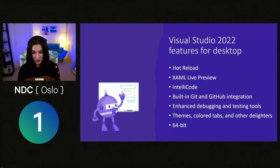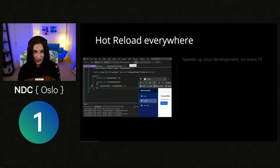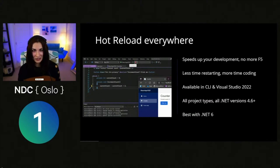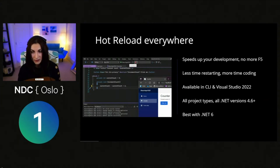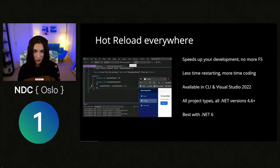One special feature I want to highlight is hot reload. In Visual Studio 2022, we got hot reload everywhere — it's enabled for all platforms: WinForms, WPF, MAUI, everywhere. Hot reload is not just for .NET 6 developers; it works on multiple project types and all .NET versions starting from .NET Framework 4.6 and higher. .NET 6 is the most optimized for the best hot reload experience, including the ability to use it without the debugger.